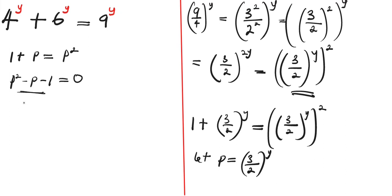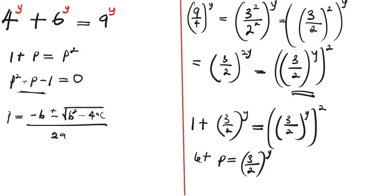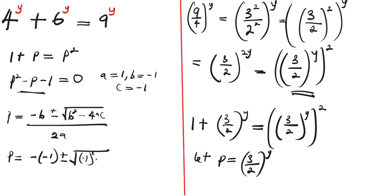We'll solve this using the quadratic formula: p = (-b ± √(b² - 4ac)) / 2a. From the equation, a = 1, b = -1, and c = -1. Substituting: p = (-(-1) ± √((-1)² - 4(1)(-1))) / (2 × 1).